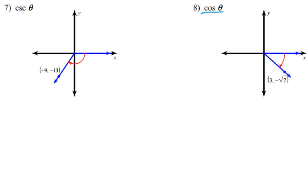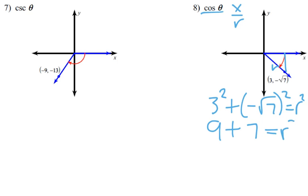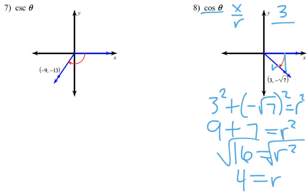Now, cosine is our last regular one. So, that's the x over the r. So, once again, we've got to find that r value. So, we go 3 squared plus negative squared is 7 squared equals r squared. 3 squared is 9. Negative squared is 7 squared. It's just positive 7 equals r squared. So, we get 16 equals r squared. Take the square root. And, we get 4 equals r. So, x value is 3. Our value is 4. So, 3 over 4.